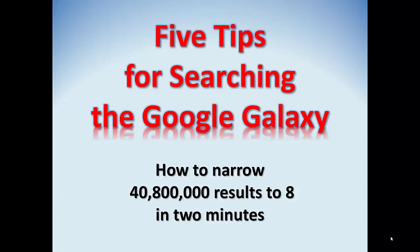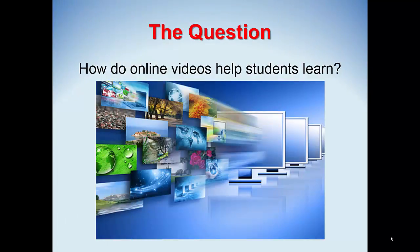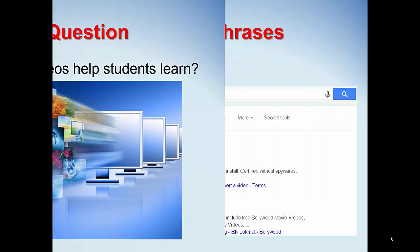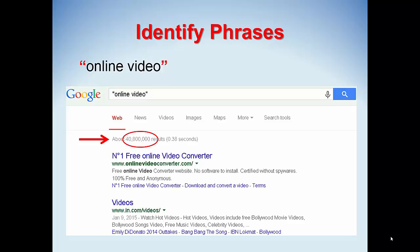We all use Google, but how can you limit your search to find what you're really looking for? Follow these five tips to limit almost 41 million hits to as few as 8. Let's start with a research question: How do online videos help students learn? Begin by indicating a phrase search using quotation marks. Note that we're starting with a set of 40,800,000 results.